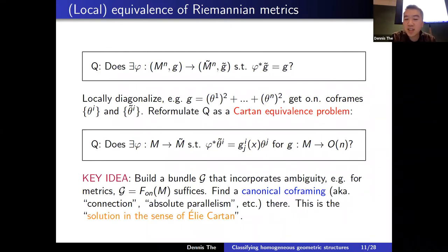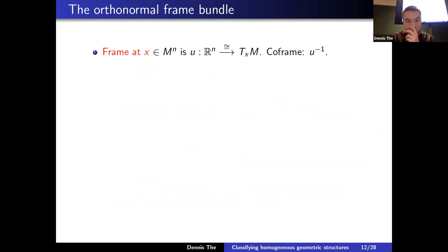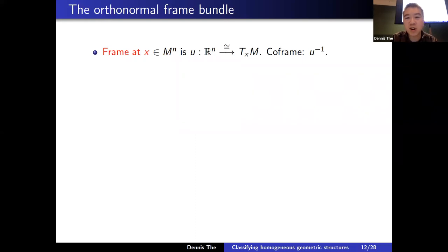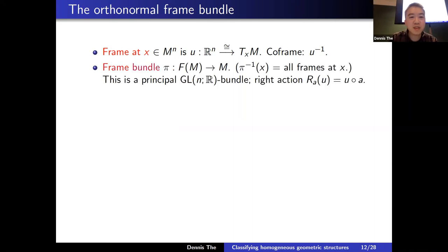For metrics, moving up to the orthonormal frame bundle is sufficient. We then try to find a canonical co-framing there — also called a connection or absolute parallelism. This is the solution in the sense of Élie Cartan to the Cartan equivalence problem. A frame at x is a linear isomorphism from ℝⁿ to the tangent space at x; the frame bundle collects all frames, forming a principal GL(n) bundle with right action by pre-composition.